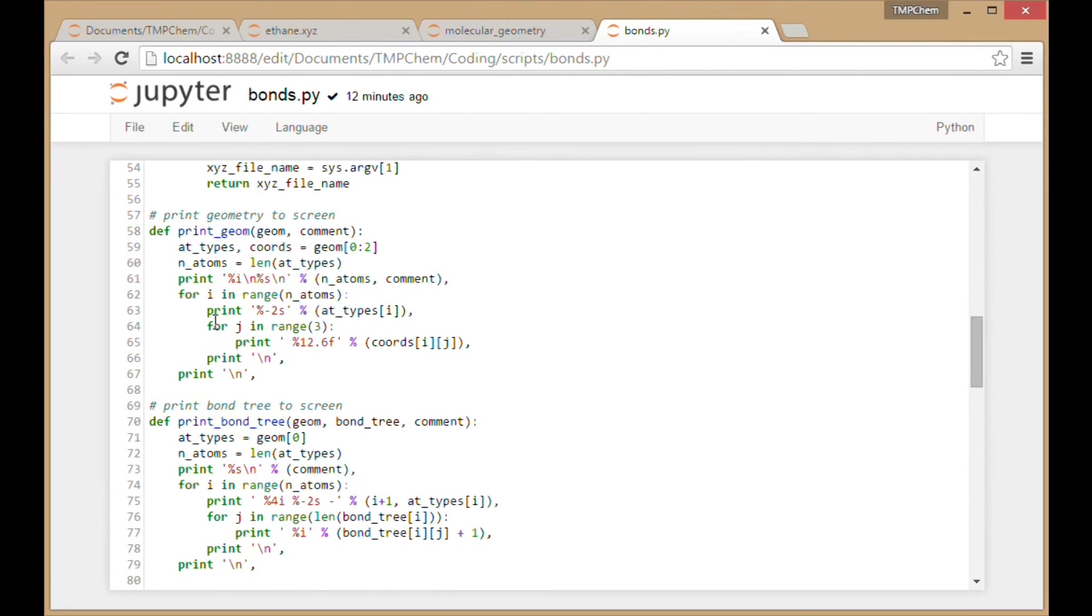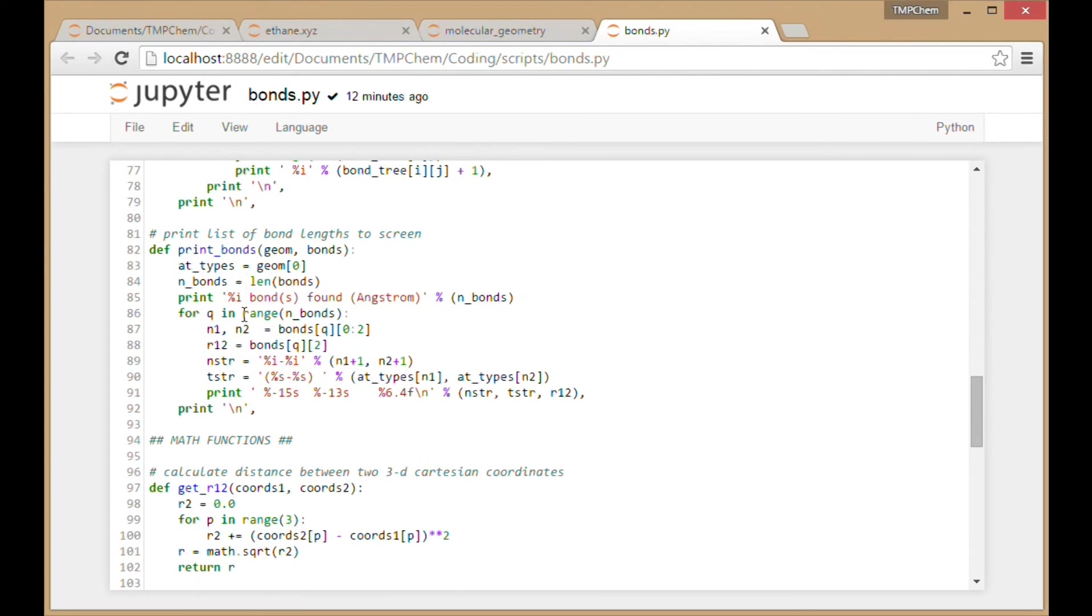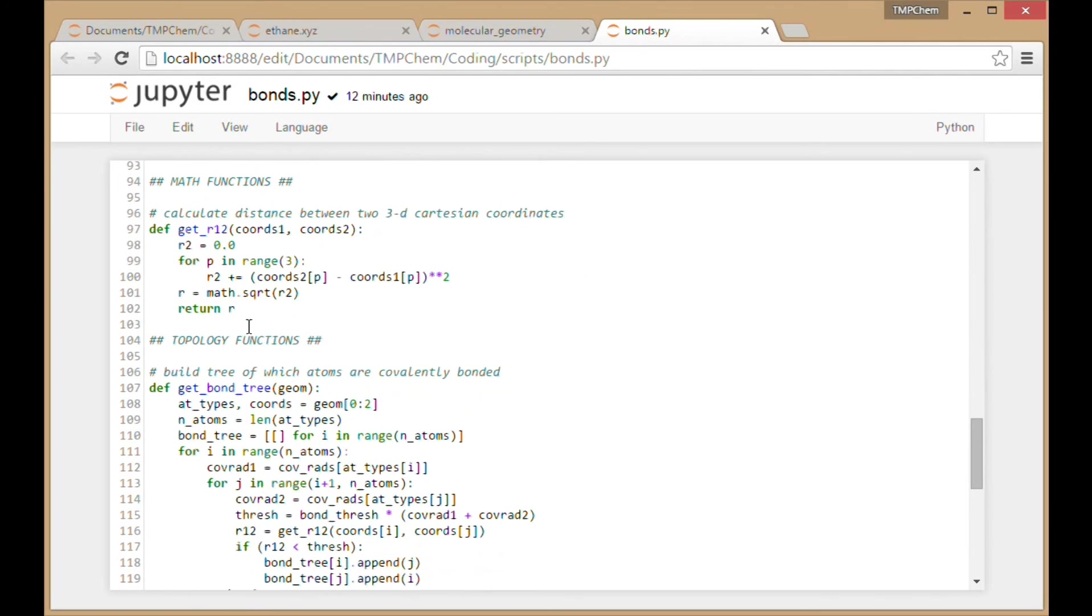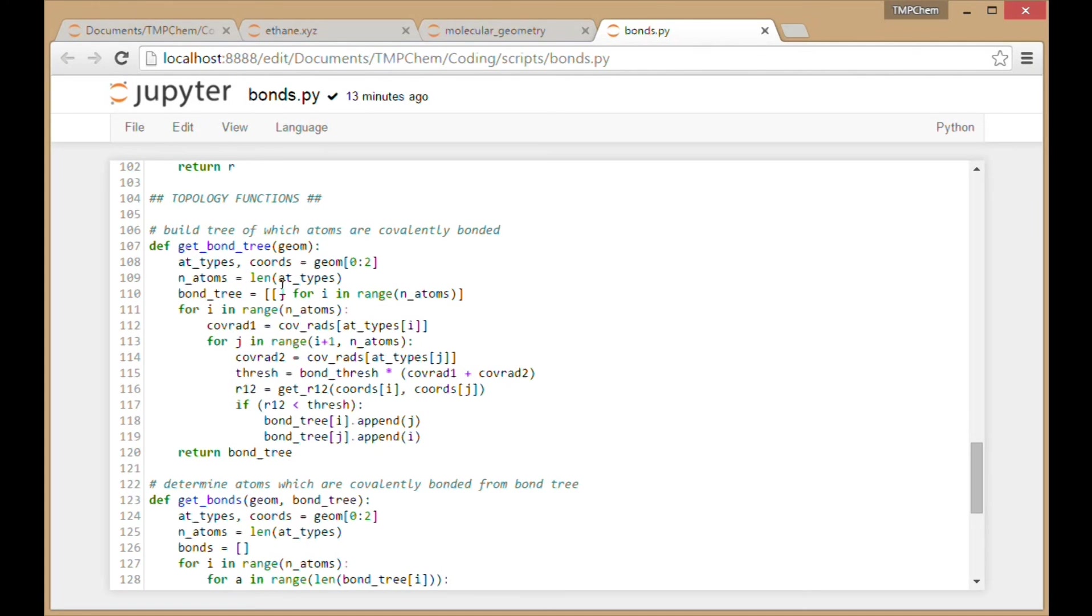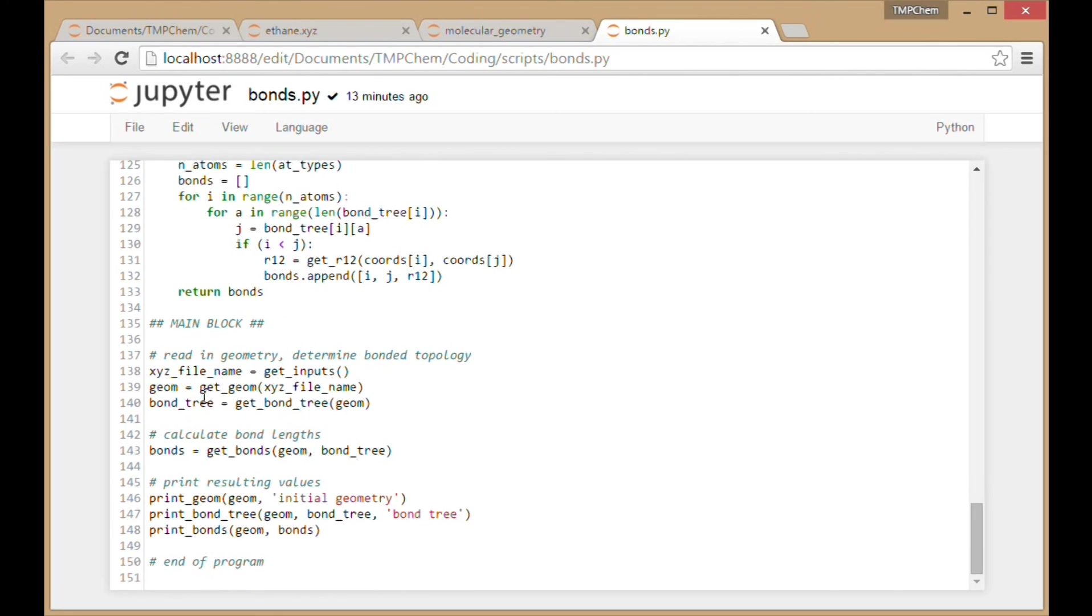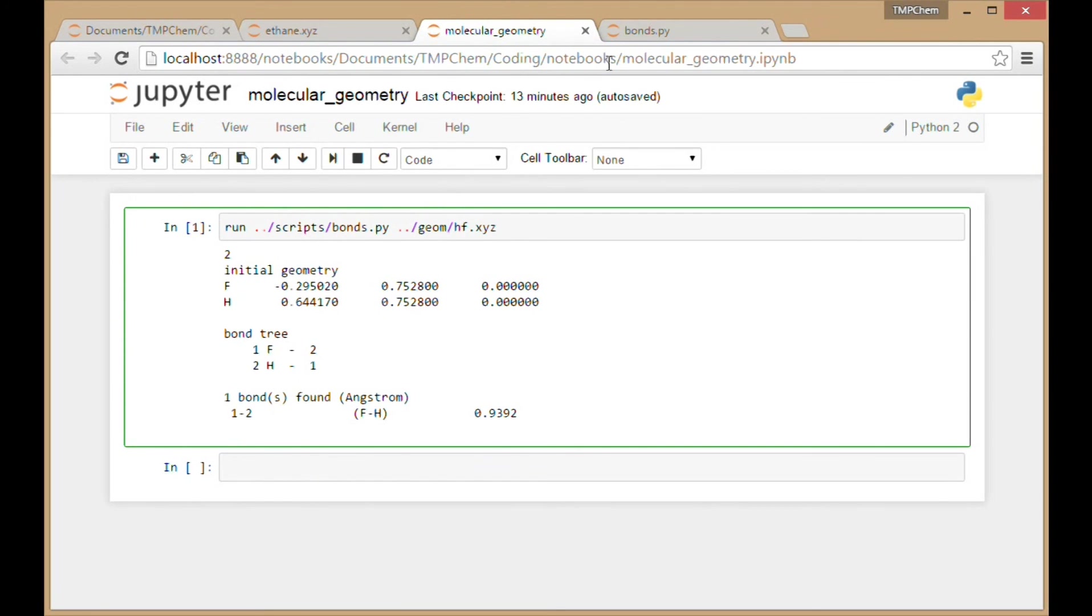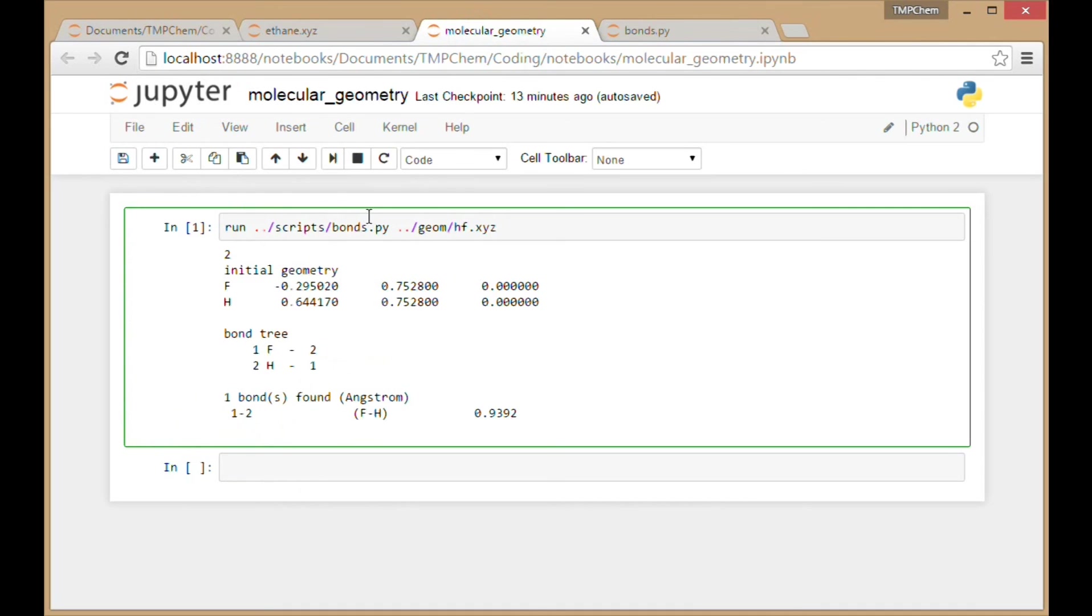There's a function to print the geometry if I choose to, a function to print the bond tree, a function to print the list of bonds. I have math functions calculating the distance between two sets of points based on their coordinates, a function to determine the whole bond tree, a function to determine which things are bonded from the bond tree. In the main block, I get the file name, get the geometry, get the bond tree, get the bonds, and then print the geometry, bond tree, and bonds.